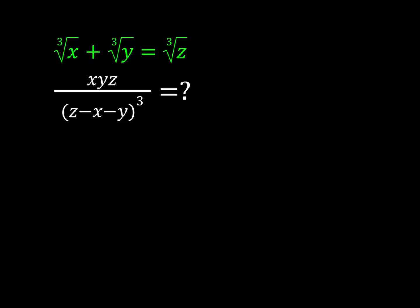This problem was suggested by one of my viewers in the comment section, but I couldn't find that comment. So if you're the one who suggested this type of problem, where the sum of two cube roots is equal to another cube root, I was asking for clearing the radicals here. So that's what we're going to do. Let's go ahead and take a look.